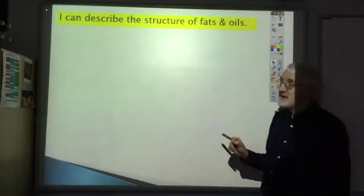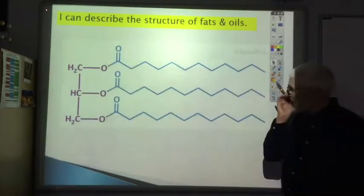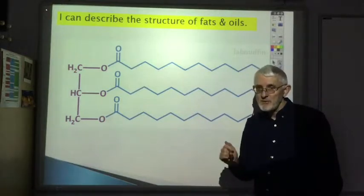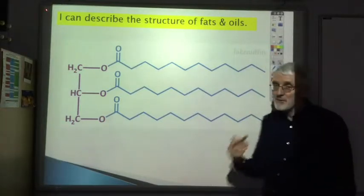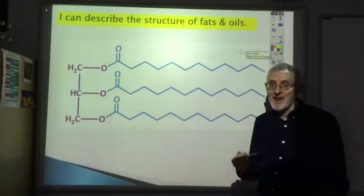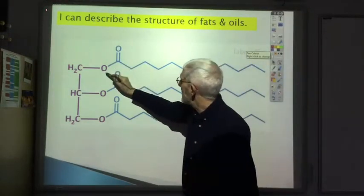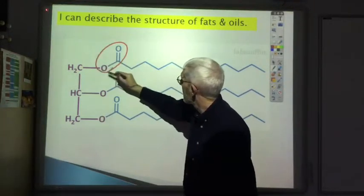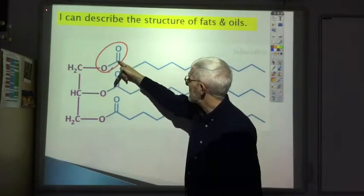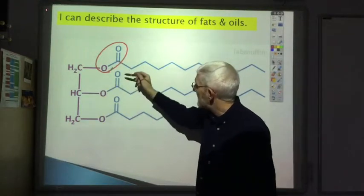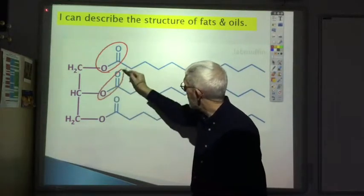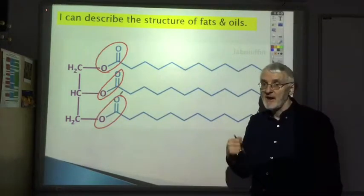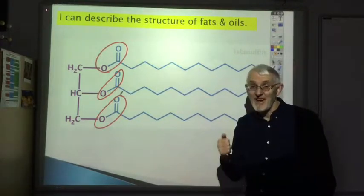We should describe the structure of fats and oils. Here's a simplified diagram of any fat or oil, but the most important thing to focus on is that from a chemical viewpoint, fats and oils are esters. So they contain this C double bond O - CO. There's a carbon atom here, and there's three of them: one there, one there, and one there. So there's three ester links in this fat or oil.